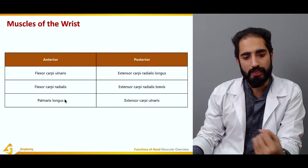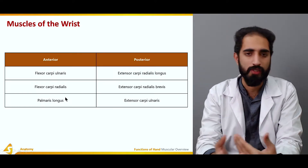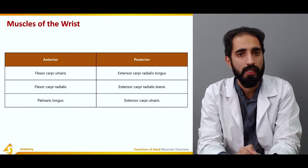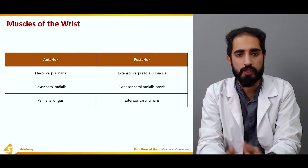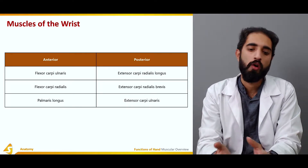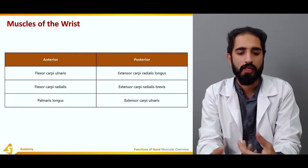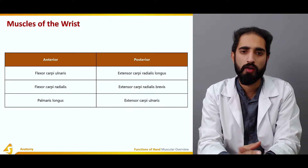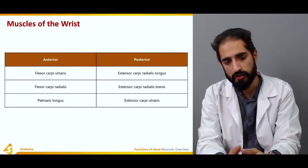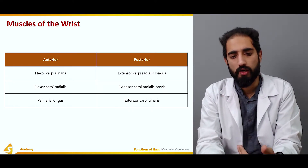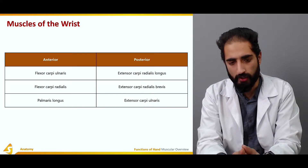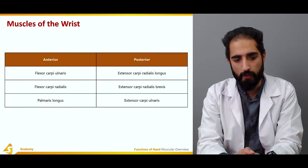Let's start with the extrinsic muscles. Extrinsic muscles are present at the anterior aspect as well as the posterior aspect. The anterior aspect contains the extrinsic flexors, and the dorsal or posterior aspect contains the extrinsic extensors. Both flexors and extensors share pretty much the same site of origin, arising from the medial and lateral epicondyles, as we will see in the upcoming section.